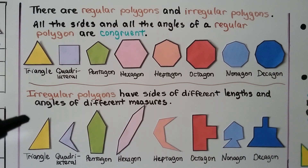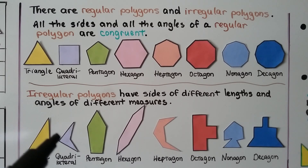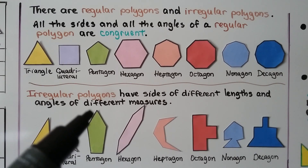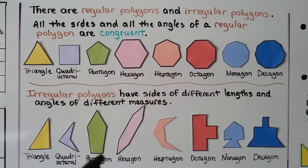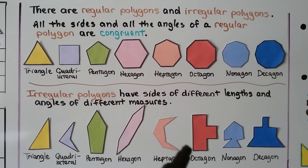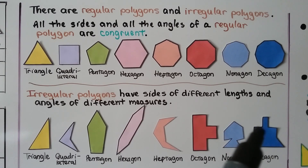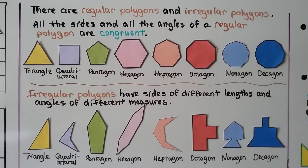Irregular polygons have sides of different lengths and angles of different measures. Here's a triangle with a short side, a medium side, and a long side. This quadrilateral has different length sides, and so does this pentagon — two short sides, two long sides, and a very short side. This hexagon has two short sides and two long sides. This heptagon looks like every line segment is a different length. This octagon has a long side and some short sides, and so do this nonagon and decagon.